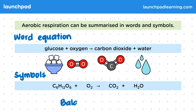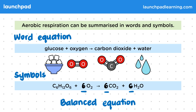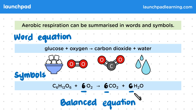We want to make this symbol equation a balanced equation. We do this by adding numbers where these blank spaces are. To balance this equation we're going to have six oxygen molecules, six carbon dioxide molecules, and six water molecules. This balances each side of the equation. So now we have six carbon atoms on this side and six carbon atoms on this side, 12 hydrogen atoms this side and 12 hydrogen atoms this side, and 18 oxygen atoms on this side, which matches the number on this side. This is now the balanced symbol equation for aerobic respiration.